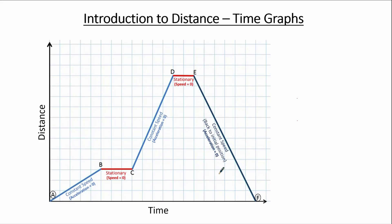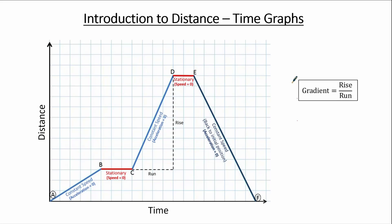Now we are going to consider stage C to D, specifically the gradient between C and D. To find the gradient we need the rise and the run. The formula for gradient is: gradient equals rise divided by run, or the difference in y divided by the difference in x. For a distance-time graph, the rise corresponds to the distance and the run corresponds to the time. So the gradient of a distance-time graph equals rise over run, which equals distance divided by time.